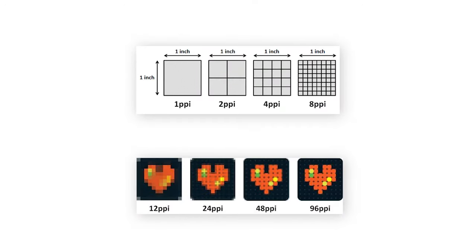Pixel density is the resolution of the display divided by the size of the screen, which gives you the PPI, or pixels per inch. The higher the pixel density, the sharper images and video will be.